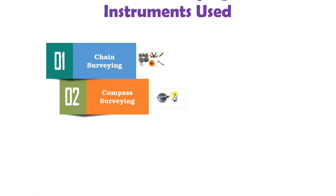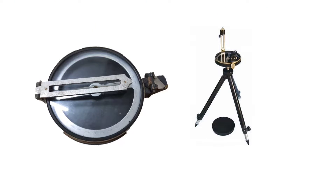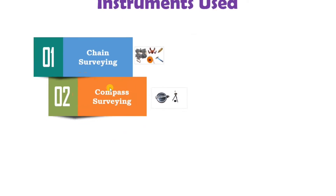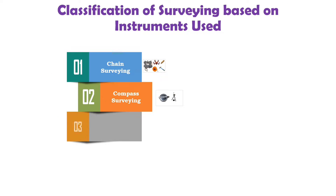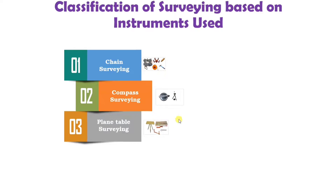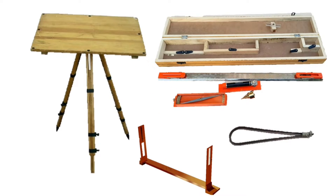The next is compass survey. In compass survey, angular measurements are taken with the help of a compass like prismatic compass and surveyor's compass. The next is plane table survey. In plane table survey, the field measurement and plotting is done simultaneously using equipment called a plane table.